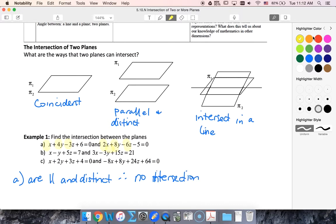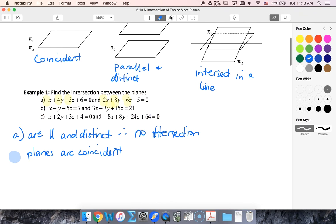If I look at the planes in B, I can see that they're exactly multiples of each other. So 1, -1, 5, 7 and 3, -3, 15, 21 - those are multiples. So we've got the planes are coincident. So they have infinite points of intersection.